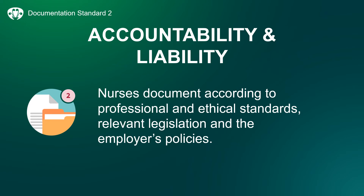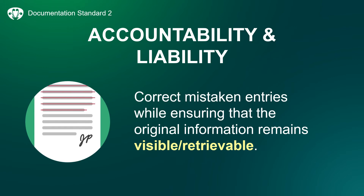When you document, include the date and time of the documentation as well as the date and time the care was provided. Documentation should follow chronological order. Remember to refer to workplace policies regarding documentation. When correcting an error, a nurse is required to ensure that the original content of the documentation is maintained. The correction and the content that was changed should be identified and the entry must be signed. Standard Indicator 2.6 states that RNs correct mistaken entries while ensuring that the original information remains visible and retrievable. For example, if you record an incorrect date, it should remain visible as documented even after you add the correct date. On the slide, we show a single red line marking out the incorrect information with initials. Employers should have policies on how to correct mistaken entries.